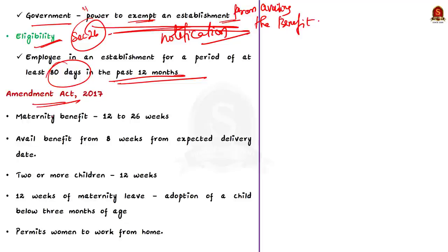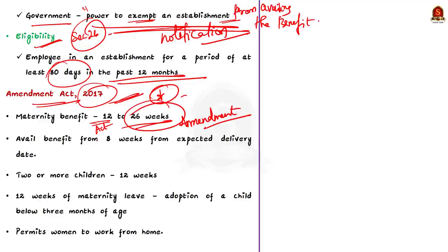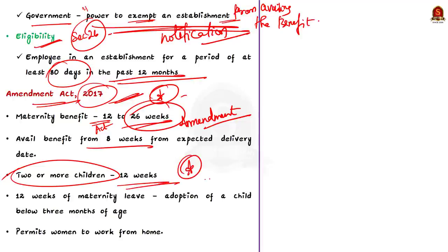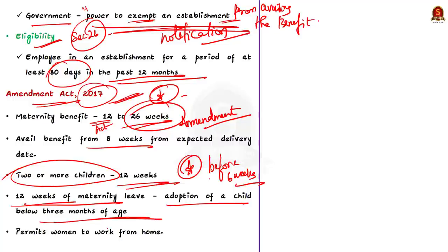The Maternity Benefit Amendment Act 2017 made several key changes. First, it increased the maternity benefit entitlement from 12 weeks to 26 weeks. Previously, a woman could not avail this benefit before six weeks from the expected delivery date; the amendment changed this to eight weeks. For a woman having two or more children, the benefit remains 12 weeks and cannot be availed before six weeks from expected delivery. Second, the amendment grants 12 weeks of maternity leave to a woman who legally adopts a child below three months of age, and also to a commissioning mother — defined as a biological mother who uses her egg to create an embryo implanted in another mother.